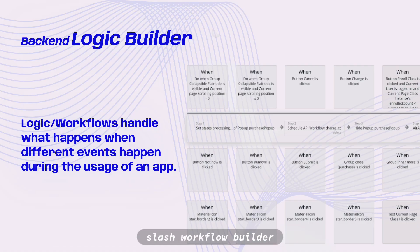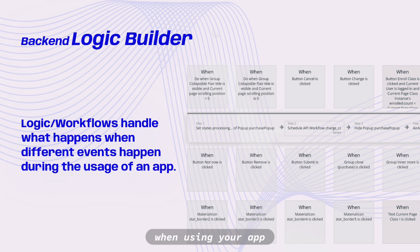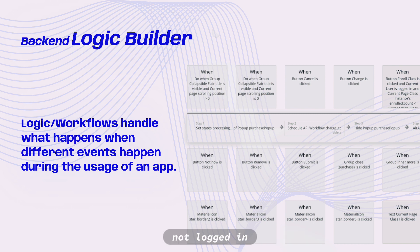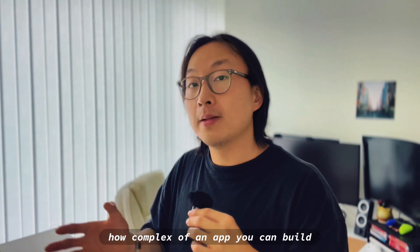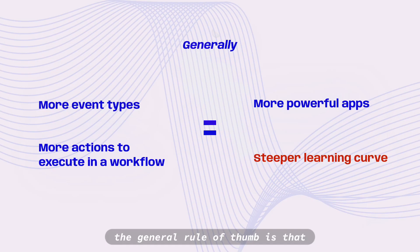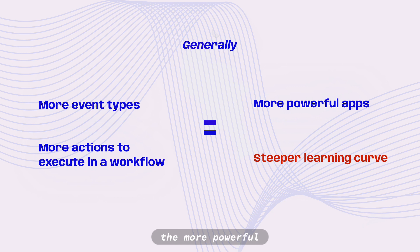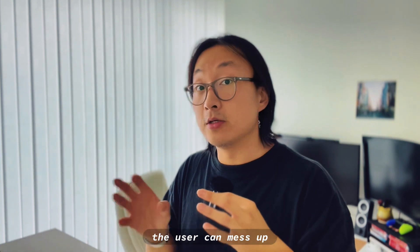In terms of the logic/workflow builder, it is an integral part of an app builder to handle what happens when different events occur while using your app — for example, what happens when a button is clicked, or what happens if the user is not logged in but visits a private page. The logic builder is usually the most important factor that determines how complex of an app you can build. The general rule of thumb is that if you have more event types to trigger a workflow, or more actions you can execute on that workflow, it means the more powerful app you can make. However, it usually comes at a cost of a steeper learning curve, because it would be a lot of information to digest and a lot of moving parts that the user can mess up.